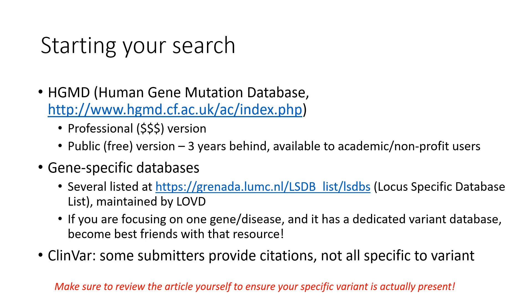There are a few resources that have already done some of the heavy lifting regarding compiling publications that describe a specific variant and provide a helpful starting point. HGMD, the Human Gene Mutation Database, has both a professional and a public version that provides variant level data with PubMed IDs and links to articles. The free version isn't as up-to-date as the paid version. Be aware that HGMD tends to be very generous with labeling variants seen in any patient with a phenotype as disease-associated, but did not classify variants using the ACMG AMP criteria. As such, HGMD is best used as a source to help you find literature, but should not be considered a repository of curated pathogenic variants.